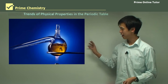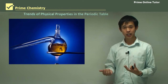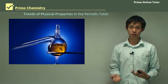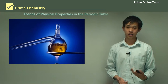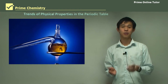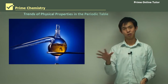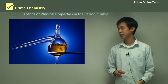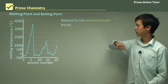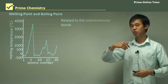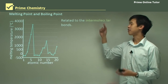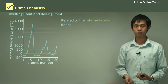So here we have some kind of chemical — boiling point is a physical property that we're quite interested in, and there are certain trends that we see as we move around the periodic table. So let's start with melting and boiling point. Melting and boiling point is basically related to how strong the intermolecular bonds are.